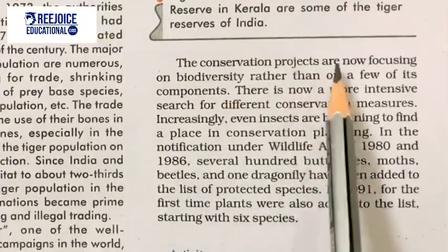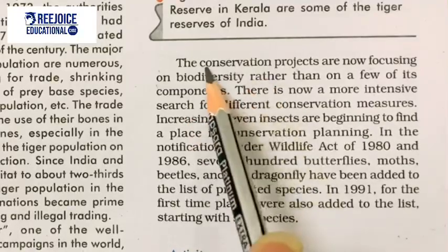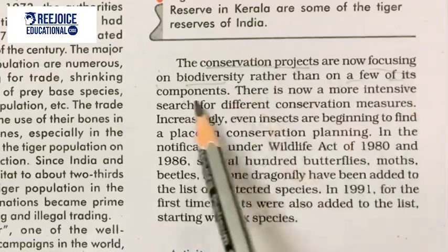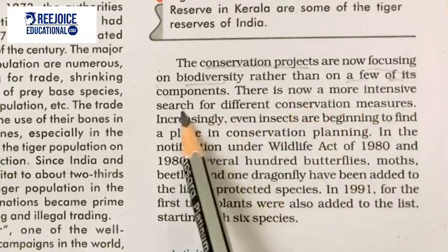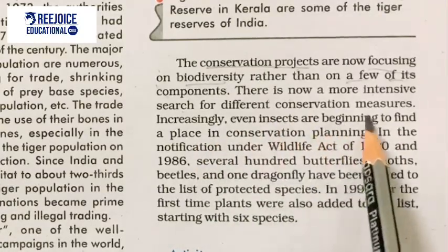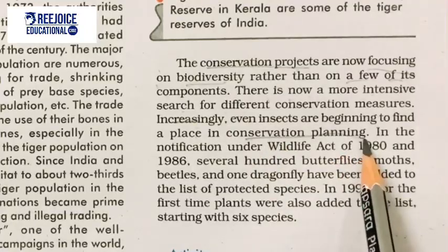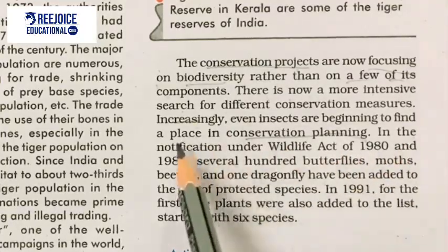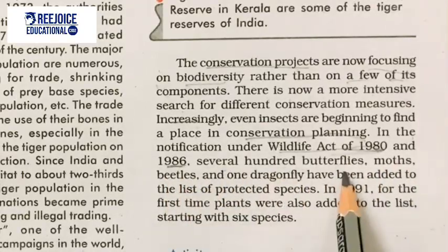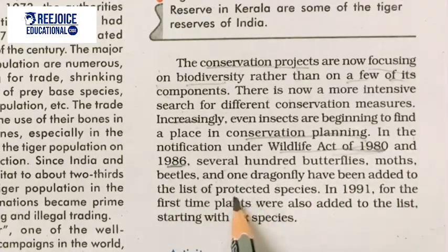Conservation projects are now focusing on biodiversity rather than on just a few of its components. There is now a more intensive search for different conservation measures. Increasingly, even insects are beginning to find a place in conservation planning. Under the Wildlife Act notifications of 1980 and 1986, several hundred butterflies, moths, beetles, and one dragonfly have been added to the list of protected species.